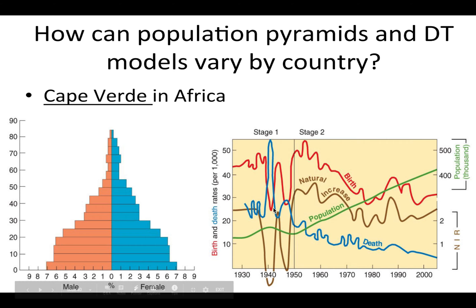Countries like Kenya show a lower natural increase rate — a variation within sub-Saharan Africa that is much lower than other countries in the region.